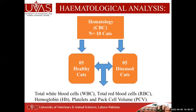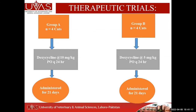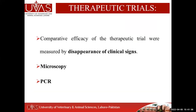For hematological analysis, 10 cats were selected — 5 healthy and 5 PCR-positive diseased cats. Parameters analyzed included white blood cell count, red blood cells, hemoglobin, platelets, and packed cell volume. For therapeutic trials, two groups of four PCR-positive infected cats each were treated with doxycycline at two different dose rates for 21 days. Disappearance of clinical signs, microscopy, and PCR were repeatedly performed to check whether animals became negative for anaplasma infection.